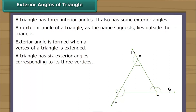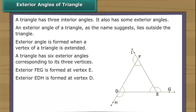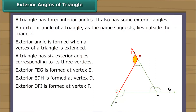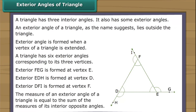If we extend vertex E of triangle FDE, exterior angle FEG is formed. Similarly, when we extend vertices D and F, exterior angles EDH and DFI are formed. The measure of an exterior angle of a triangle is equal to the sum of the measures of its two interior opposite angles. In the figure, angle FEG is equal to the sum of angles FDE and DFE.